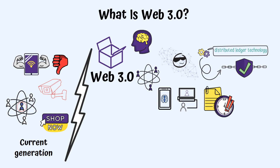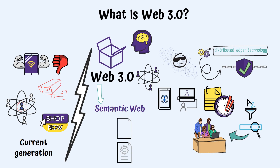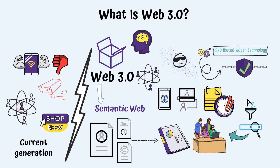This is why Web 3.0 is also known as Semantic Web. The websites that use artificial intelligence should be able to filter available data and present to the user the information they consider adequate. The goal is for the artificial intelligence to allow the system to interpret the meaning behind data — the semantics — thus offering a personalized experience.